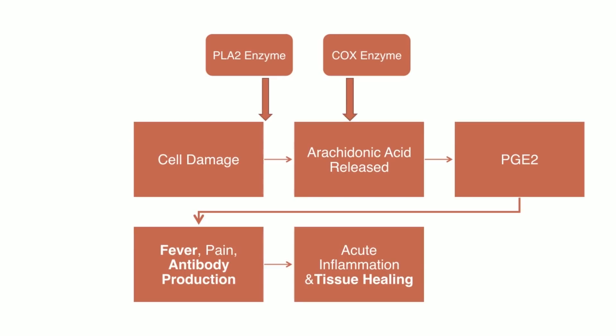When your cell gets damaged, it releases a compound called AA — arachidonic acid. The COX enzyme combines with that arachidonic acid and together they create inflammation. Phospholipase A2 also acts in the same area and can create a release of inflammatory mediators. The big chemical that gets released is PGE2 — prostaglandin E2 — a type of chemical produced inside your cells as they're damaged and as those enzymes take effect.